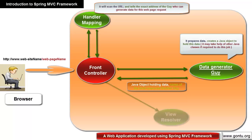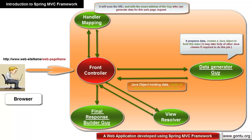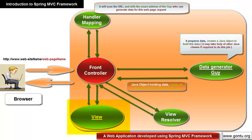So the front controller sends this name to another helper called the view resolver, which tells it the exact address of that component. Now the front controller has the Java object holding data and the exact address of the component that will generate the actual response by putting this data into HTML code. It sends the Java object to this component, which retrieves the data, puts it into the HTML in the desired fashion, and returns it to the front controller. The front controller then sends this as a response to the client's browser, which displays it.